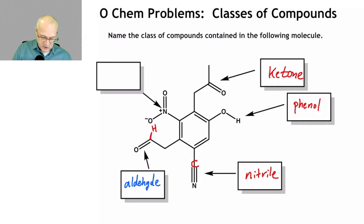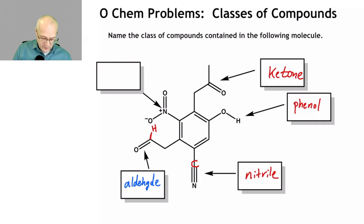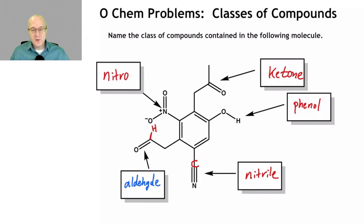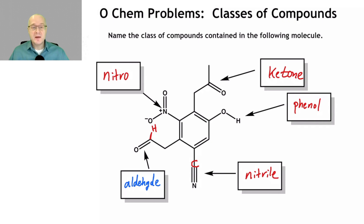Last but certainly not least, it's pointing at the nitro group. It's a nitro compound. Nitro is a nitrogen double bonded to an oxygen, single bonded to a second oxygen. The nitrogen is positive and one of the oxygens is negative. That's called nitro.